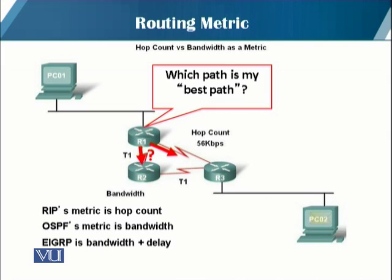RIP is a routing protocol that uses hop count as the metric for determining the best path. OSPF is another routing protocol that uses bandwidth as the metric. Similarly, EIGRP is a Cisco proprietary routing protocol that uses both bandwidth and delay as metrics to determine the best path.